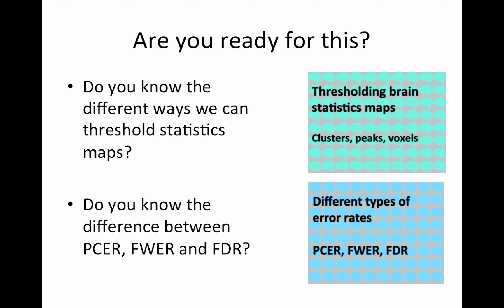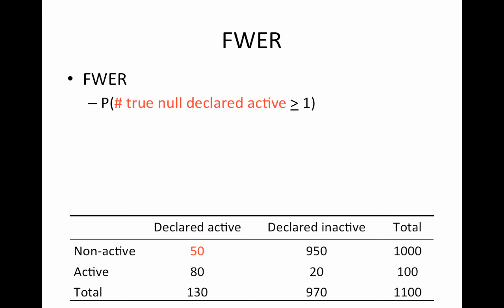Make sure you're ready. Do you know the different ways we can threshold statistic maps? Also, do you know the difference between PCER, FWER, and FDR? If not, revisit the thresholding brain stat maps and different types of error rates lectures.